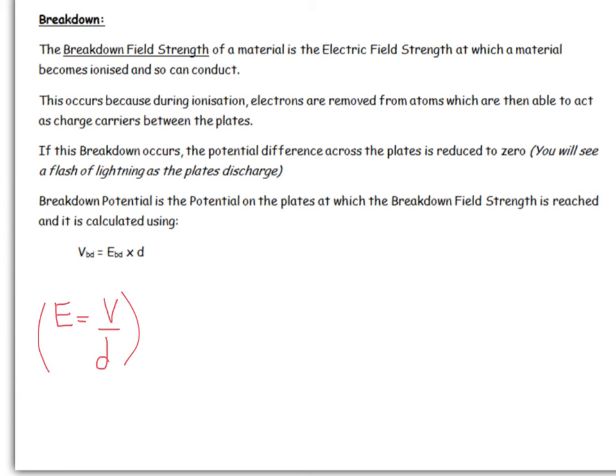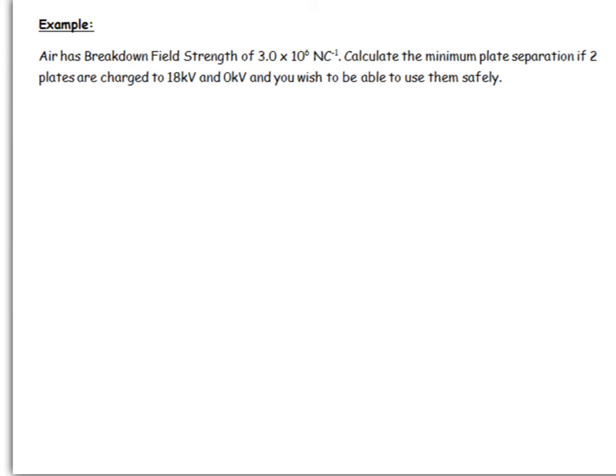Let's look at an example question for this. Air has breakdown field strength of 3.0 times 10 to the 6 newtons per coulomb. Calculate the minimum plate separation if two plates are charged to 18 kilovolts and 0 kilovolts, and you wish to be able to use them safely. Being able to use them safely implies that there shouldn't be a spark jumping between them, because that's inherently dangerous.